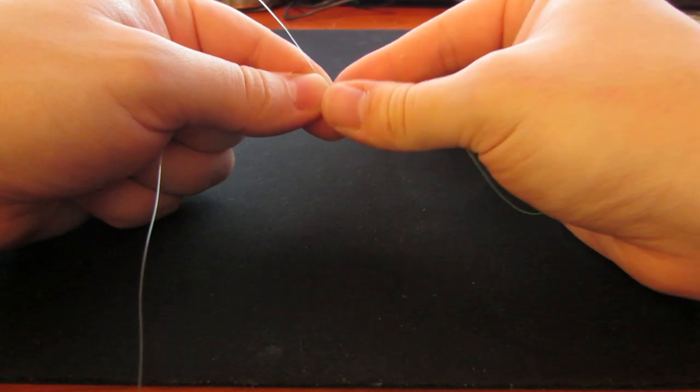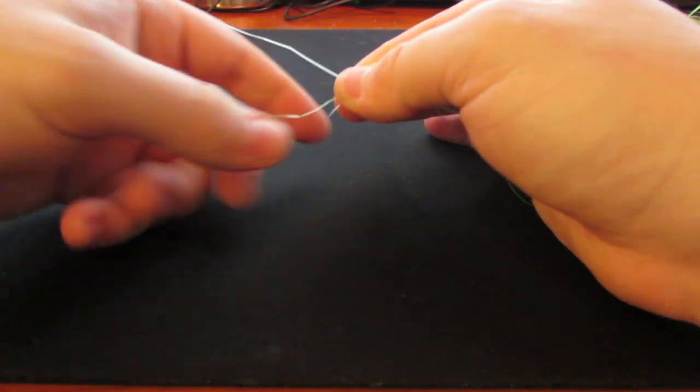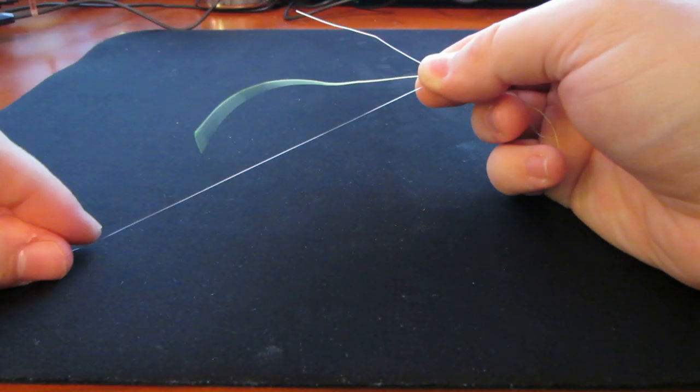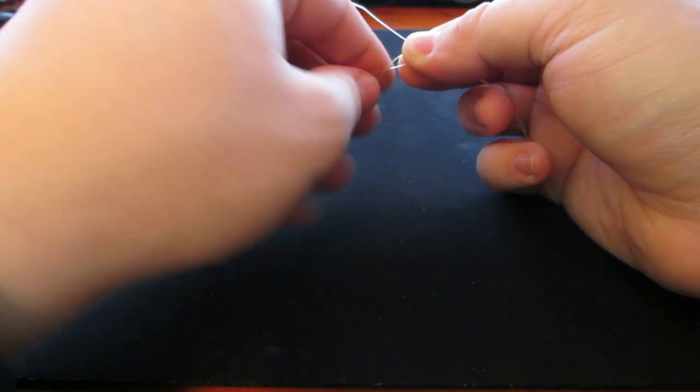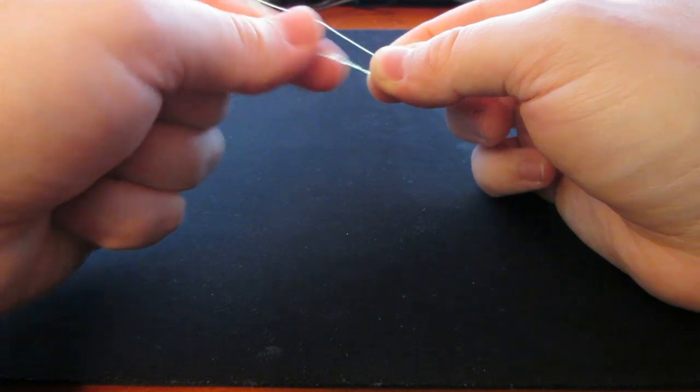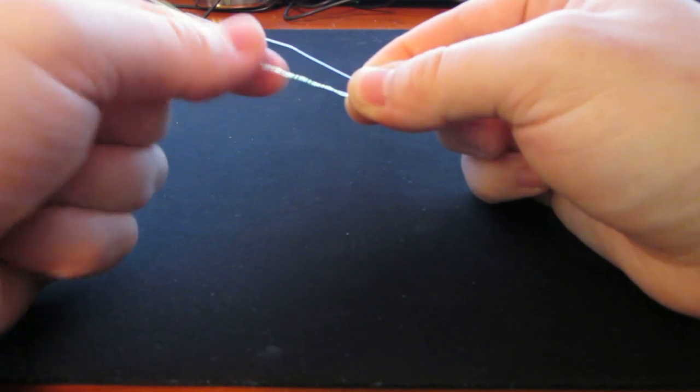Now what I like to do is switch hands, hold everything with your right hand here. Do the same thing with your left side. So you put this tag end around this main line about five times. One, two, three, four, and five.